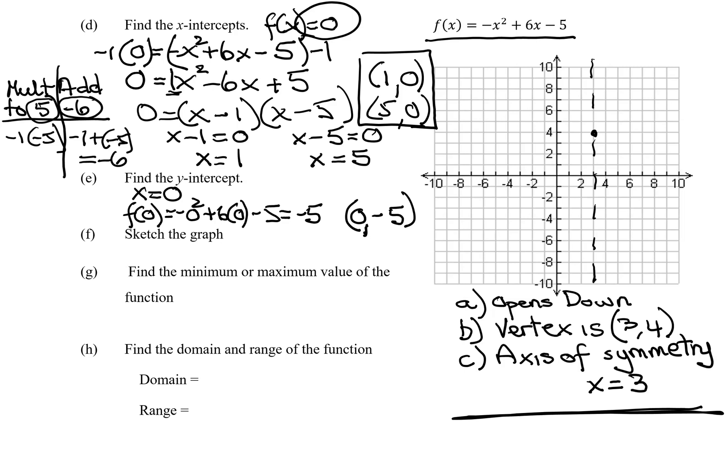The 2 x-intercepts are 1, 0 and 5, 0. And the y-intercept is 0, negative 5. So that's on the y-axis. So I think that is enough information to sketch my graph.